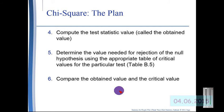Continuing with the chi-square plan, we computed our test statistic, called the obtained value. Then we find table B5 in our textbook, and determine the value needed for rejection of the null hypothesis. Just like we did with the f-test, the t-test, etc. We compare the two, the obtained and the critical.